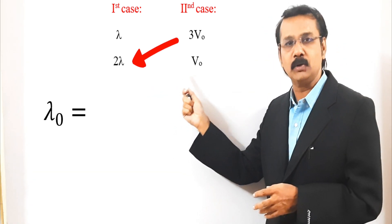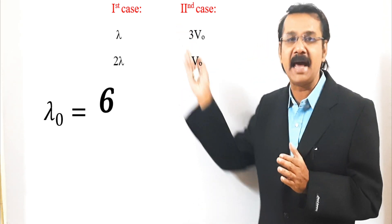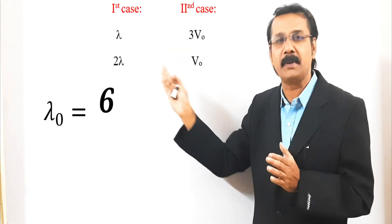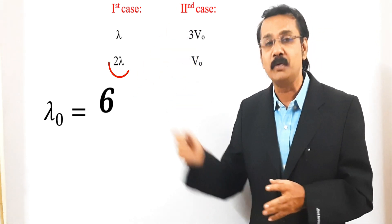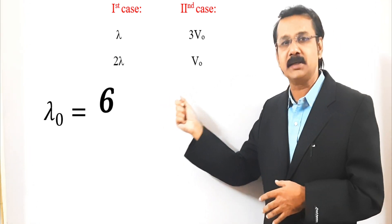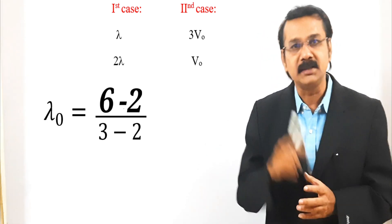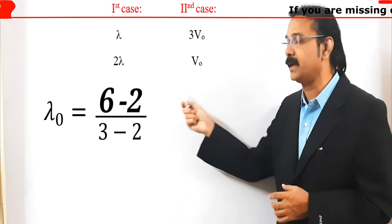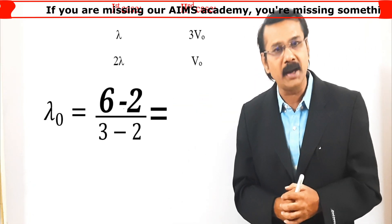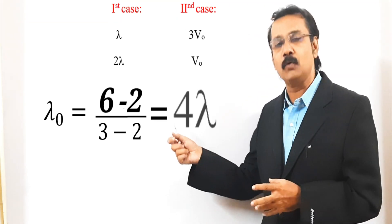You substitute here, lambda naught is equal to 6 minus. Tell me which is the smallest number in the diagonal. If you see the smallest number, the smallest number is 2 which has been encircled. Now, I am going to substitute here. Lambda naught is equal to 6 minus 2 divided by. There are two numbers alike, 3 and 2. Subtract it, 3 minus 2. You get 4 by 1. That is equal to 4. If you are writing as 4, we have to take it as 4 lambda.